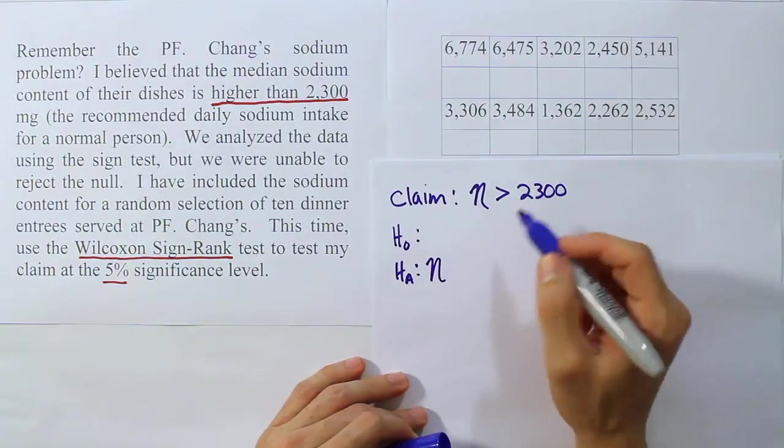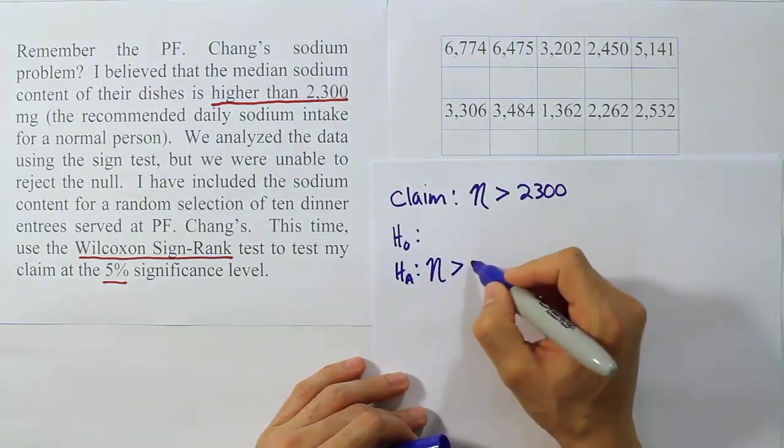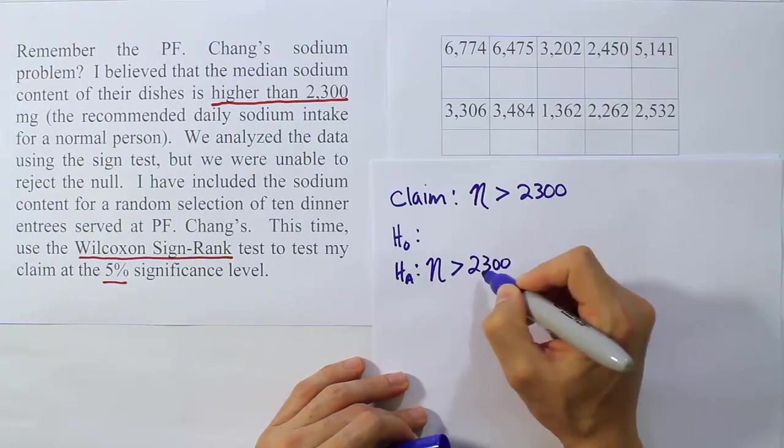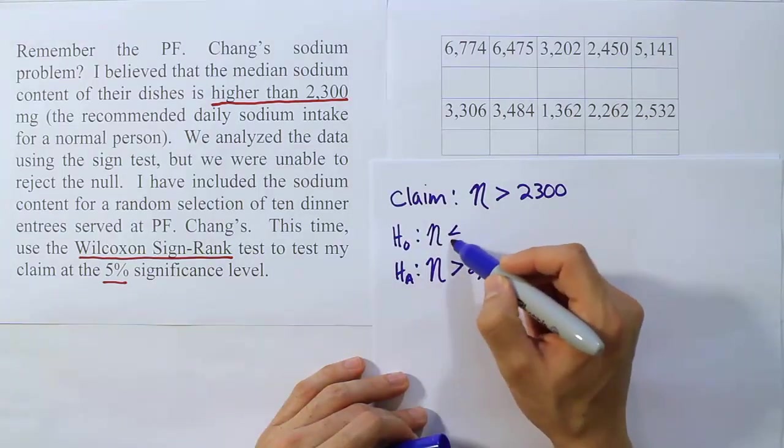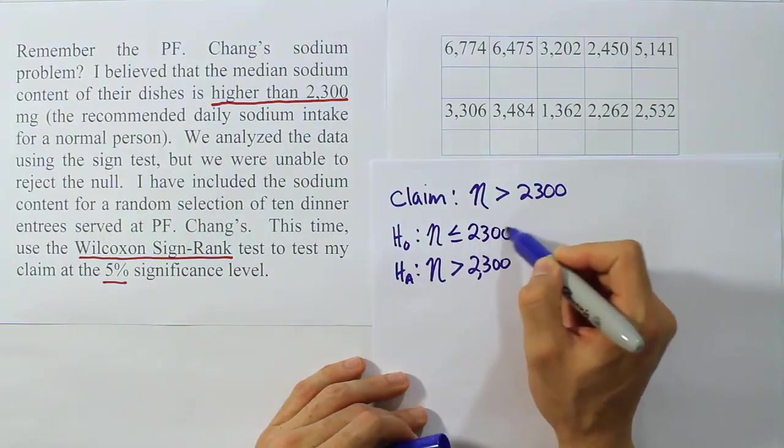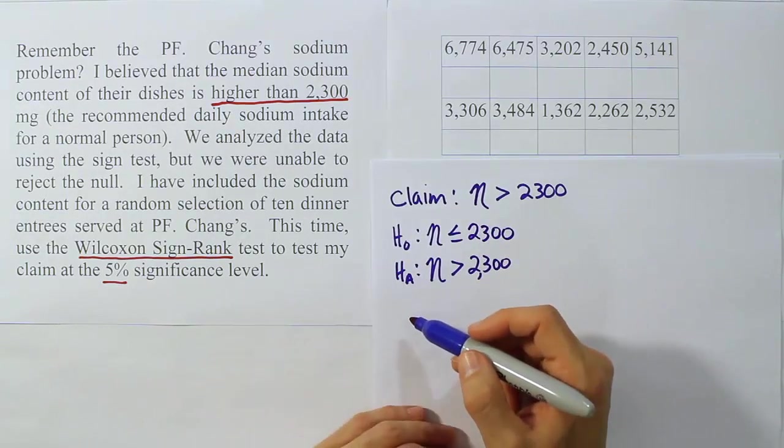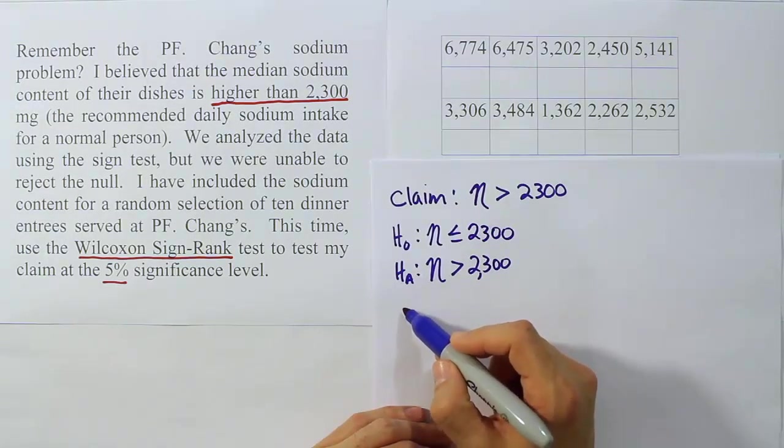If this claim has a greater than symbol, it must be H_A because that's one of H_A's symbols. And H_0, of course, is the opposite statement, which is that η is less than or equal to 2300. From there, we're going to write down the significance level. So α is 0.05.